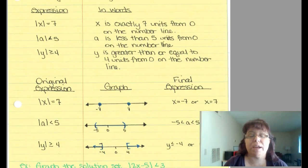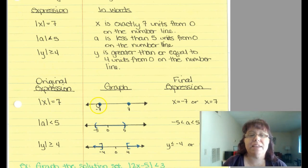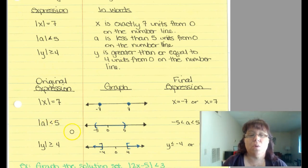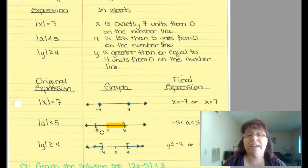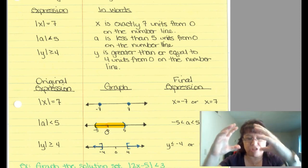Let's look at the number line and see how this works. If the absolute value of x equals 7, that means x could be negative 7, because the absolute value of negative 7 is 7. And the absolute value of positive 7 is 7, so both of those points will satisfy that equation. The absolute value of a is less than 5 — think about it, it's less than 5 units from 0. The positive side: 4, 3, 2, 1 are all less than 5. But the absolute value of negative 5, negative 4, negative 3, negative 2 — that would be the other range of values.